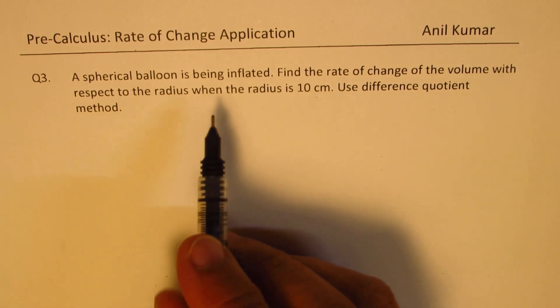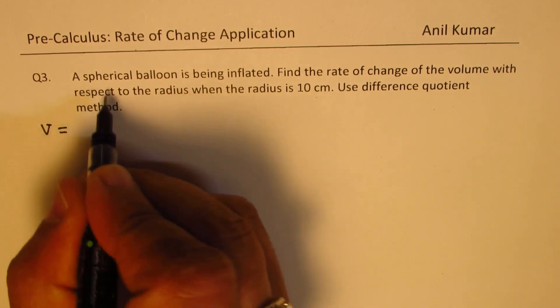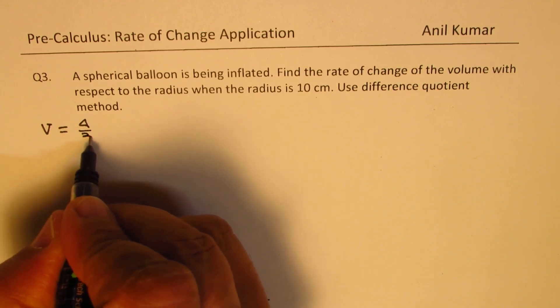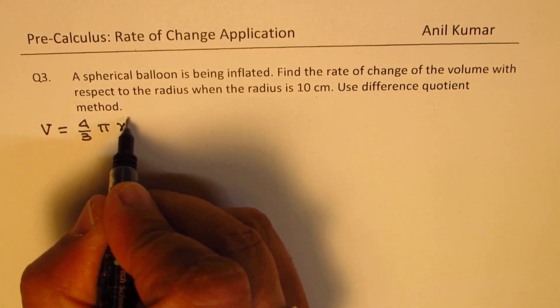You need to know some formulas here. First is the volume itself of a sphere which is four by three pi r cubed.